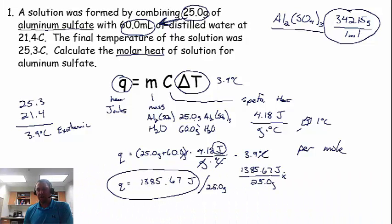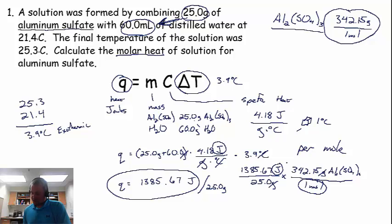And you remember how earlier I wanted you to remember that there was 342 grams in one mole of aluminum sulfate. If we multiply here, we can get a number that is measured in joules per mole. In fact, if we multiply times 342.15 grams of aluminum sulfate per every one mole of aluminum sulfate, our grams will cancel, and we'll be left with the unit we desire, which is joules per mole. So let's multiply 1385.67 times 342.15 divided by 25 gives us, find my pen here...